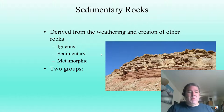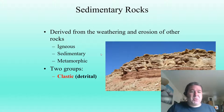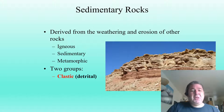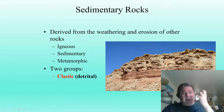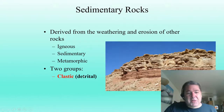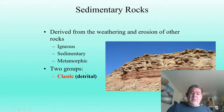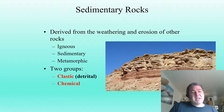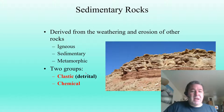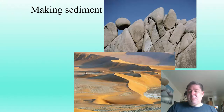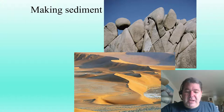In sedimentary rocks, we have two main groups. The first one is clastic, also known as detrital — a clast of something, or detritus. The second group is chemical sedimentary rocks. We'll get to both of these in due time. But before you make a sedimentary rock, you have to make the sediment.